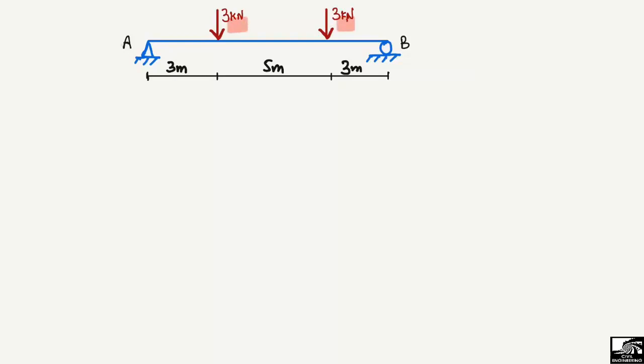We have two supports: one is A, represented by a hinge support, and one is a roller support represented by B. The different dimensions of the beam are given to us. We have to find the support reactions and then draw the shear force diagram and the bending moment diagram for this beam with two point loads.